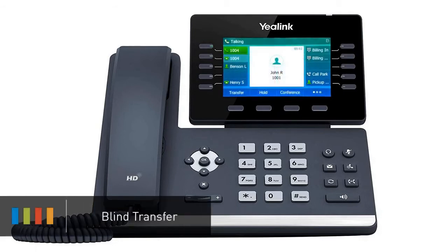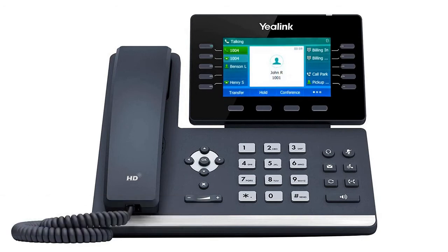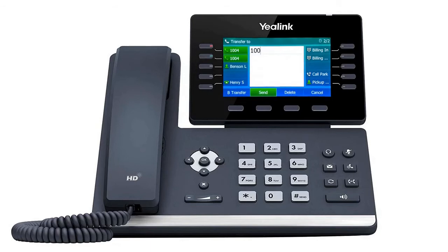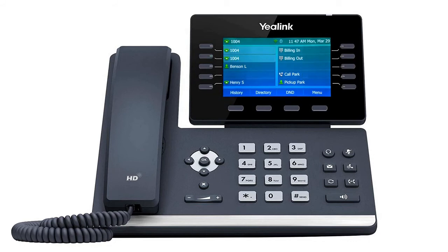A blind transfer allows you to immediately transfer a call to another number or extension. On the bottom of the screen, press the transfer soft key. Dial in the number or extension you wish to transfer the call to and press B-Transfer. The call will immediately start ringing to the second party.